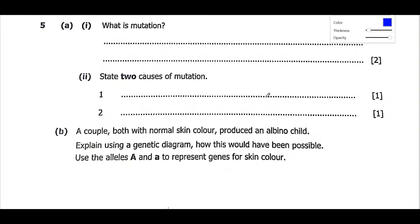Welcome guys. We are now going to look at Part 3 of marriage paper 2 for the year 2024 for GCE. If you missed Part 1 and Part 2, make sure you go through them because Part 1 covered questions 1 and 2, and Part 2 covered questions 2 and 3. Now we have question 5, which is coming from the topic of genetics.